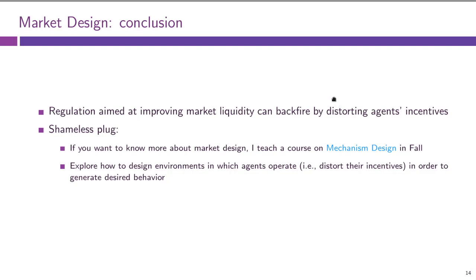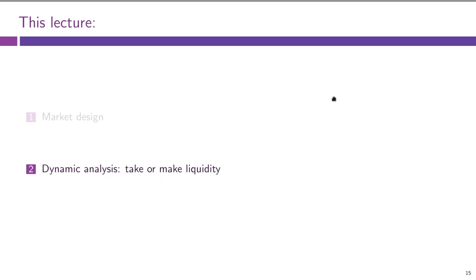That was our quick ad break. We will also touch upon another aspect of market design, which is market fragmentation — is it better or worse to have many different markets trading in the same asset? We'll do that next week. But now it's time to move on to dynamic analysis of limit order book markets and ask how traders actually decide whether to take or make liquidity — whether to submit limit or market orders.